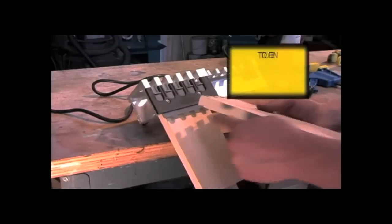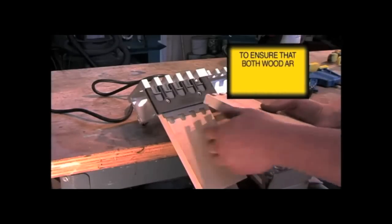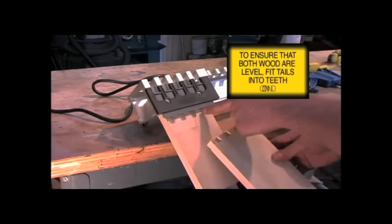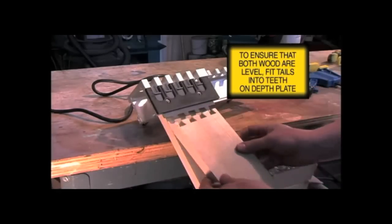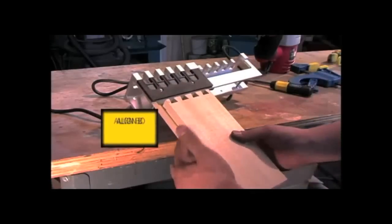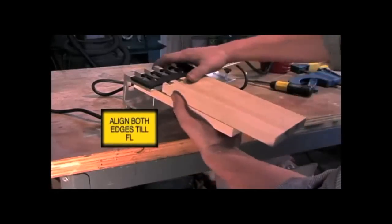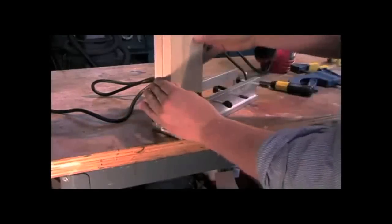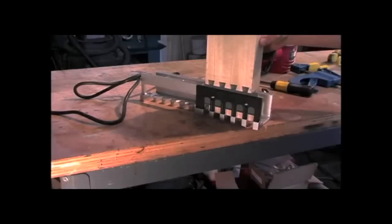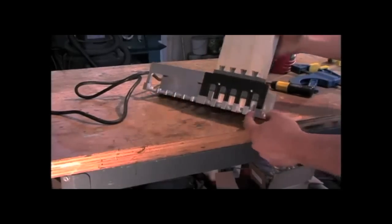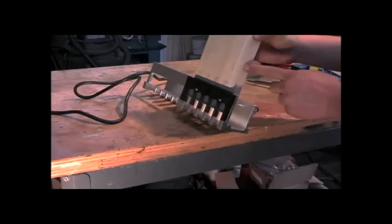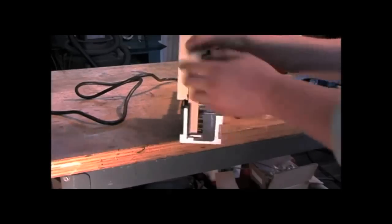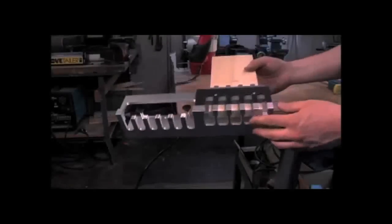Now to ensure that the tops of both boards are aligned, we insert the tails into the teeth on the bottom of the depth plate. And we align both edges so that they're flush. Now after we cut the pins, the wood will be perfectly aligned.